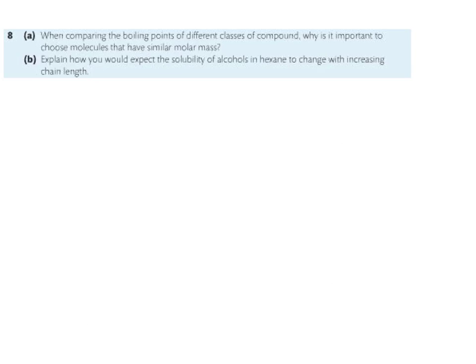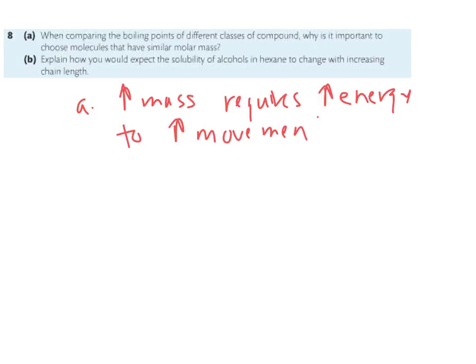8A wants to know, when comparing the boiling point of different classes of compounds, why is it important to choose molecules that have similar molar mass? Well, increased mass, as you would expect, requires an increase in energy to increase the movement, which is what leads to boiling point. There's enough movement to break free of the bonds. So you have to have somewhat similar, or you don't know if it's the polarity or if it's the mass that's creating the changes.